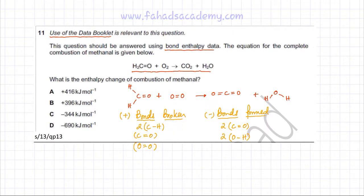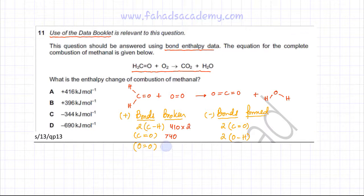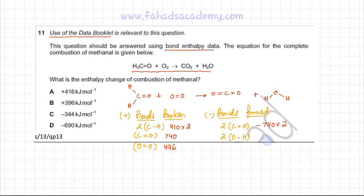Referring to the data booklet: the C-H bond energy is 410 kJ/mol, multiplied by two because there are two C-H bonds. The C=O bond energy is 740 kJ/mol, and the O=O bond energy is 496 kJ/mol. For bonds formed: two C=O bonds at 740 kJ/mol each (so 740 × 2, with a negative sign), and two O-H bonds at 460 kJ/mol each (460 × 2, also negative).